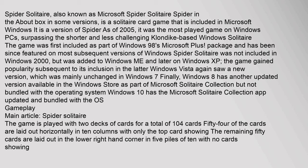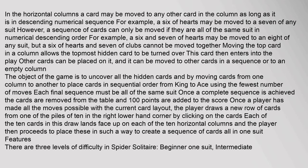The game is played with two decks of cards for a total of 104 cards. 54 of the cards are laid out horizontally in 10 columns with only the top card showing. The remaining 50 cards are laid out in the lower right-hand corner in 5 piles of 10 with no cards showing. In the horizontal columns, a card may be moved to any other card in the column as long as it is in descending numerical sequence. For example, a 6 of hearts may be moved to a 7 of any suit.